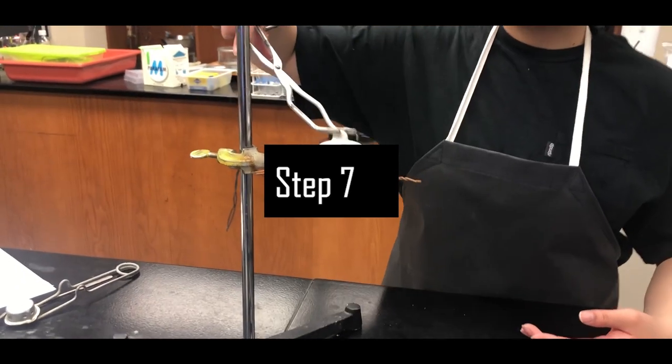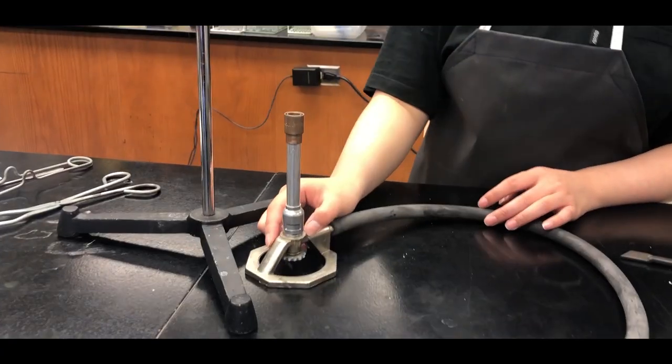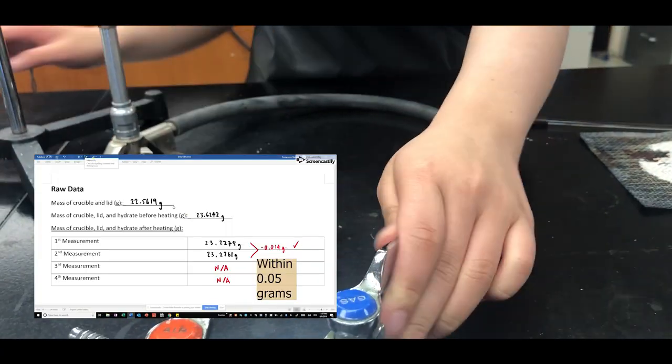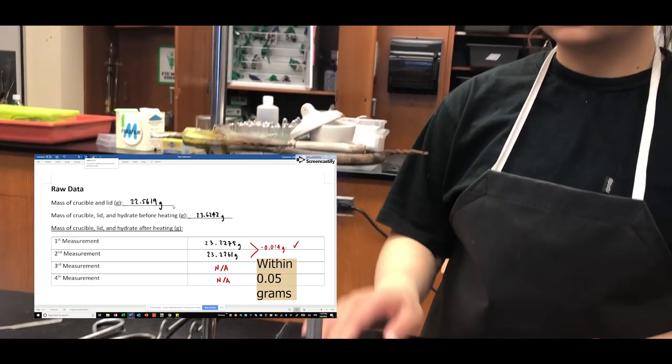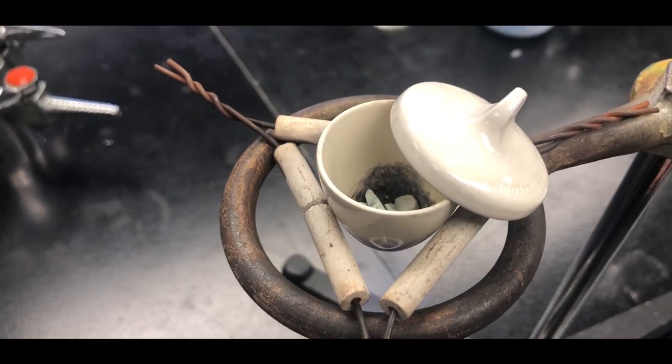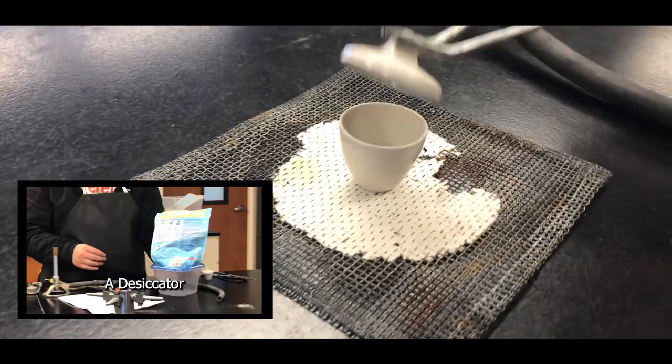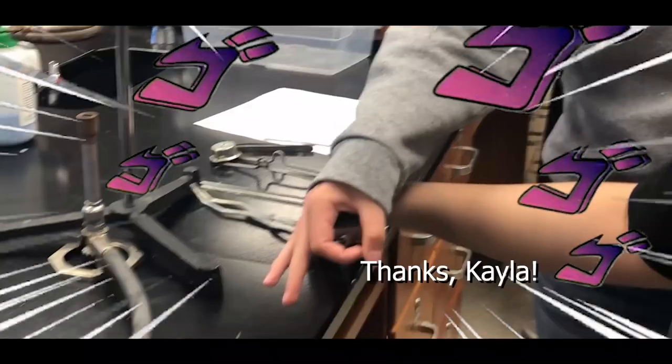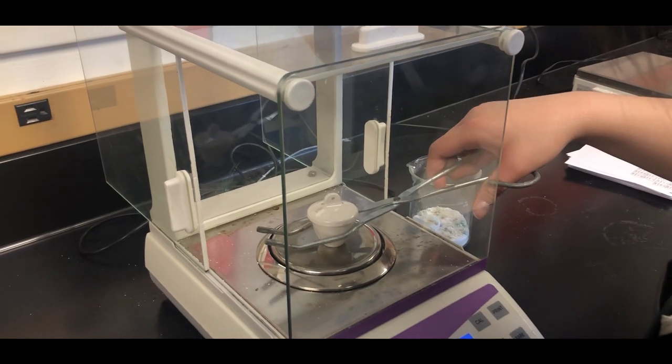Now, step 7. If the two mass measurements of the anhydrate are not within 0.05 grams of each other, repeat step 4 through 6. Place your crucible into a desiccator if the time constraints force you to complete this experiment on a second day.